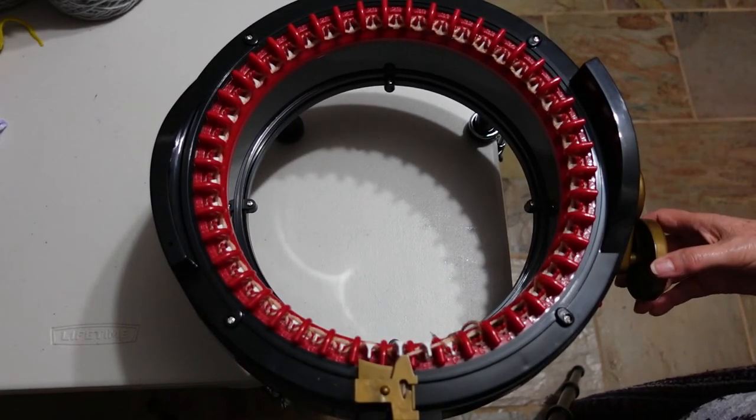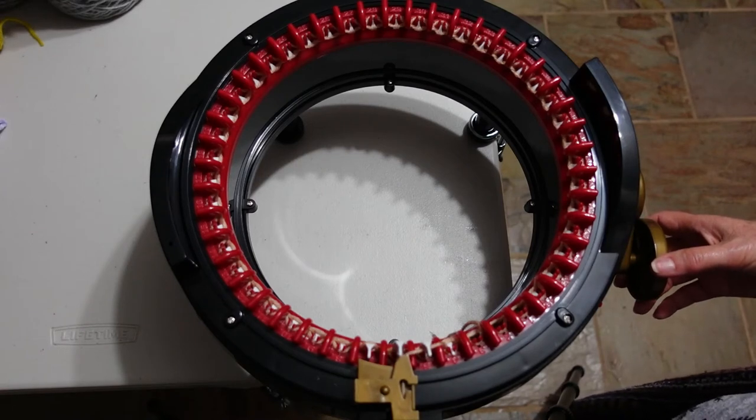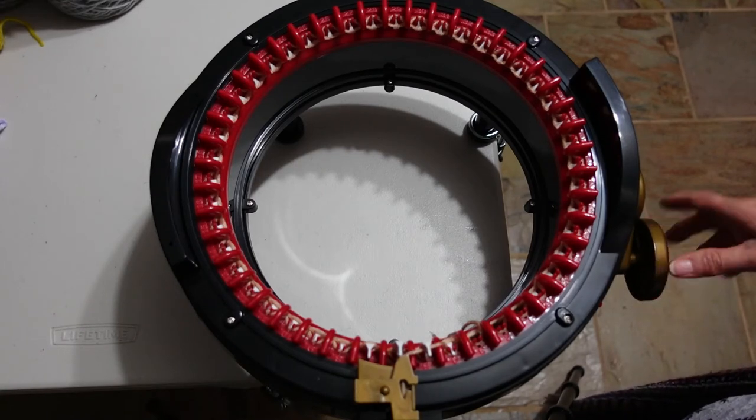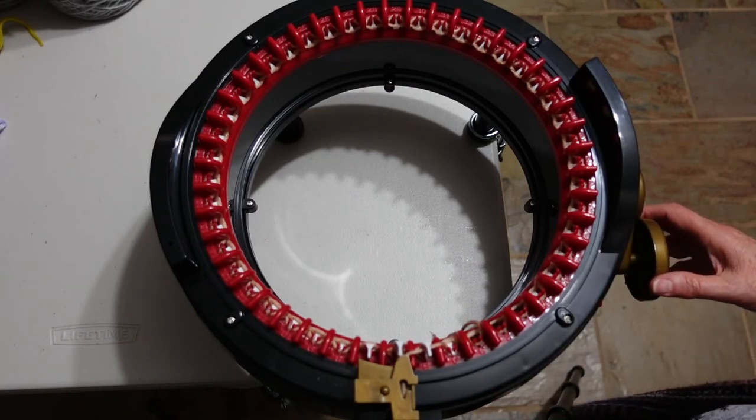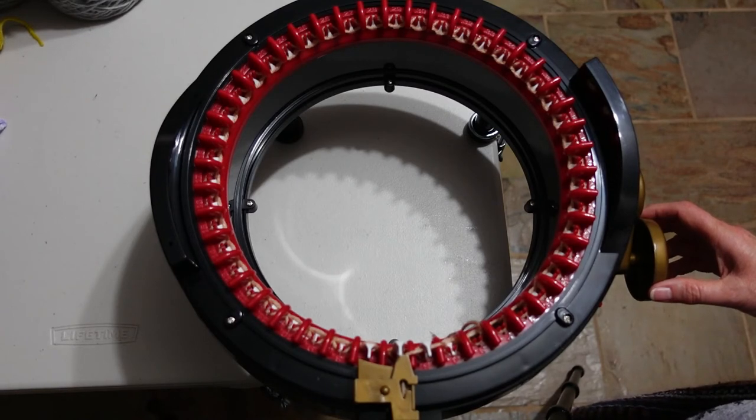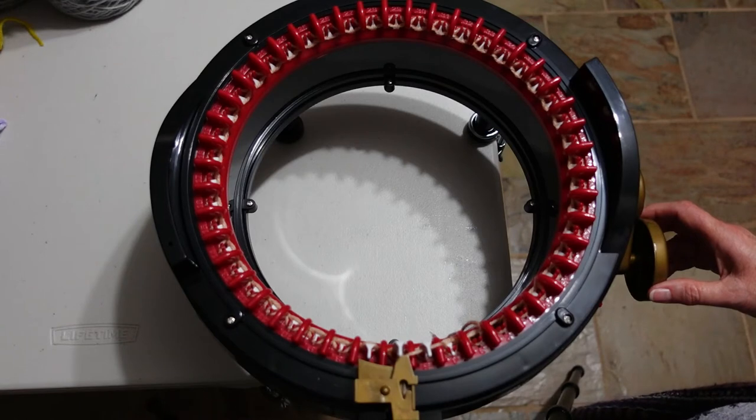The loud clunking noise is nothing to worry about, that is the mechanical row counter. It's just off screen clicking over each row. Apparently these used to come with electronic counters, but they were notoriously inaccurate...